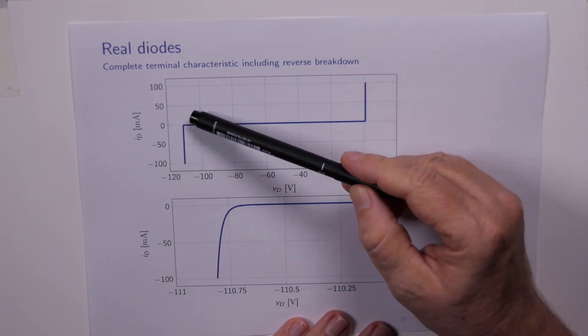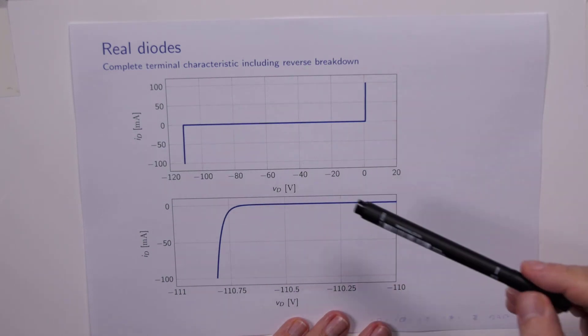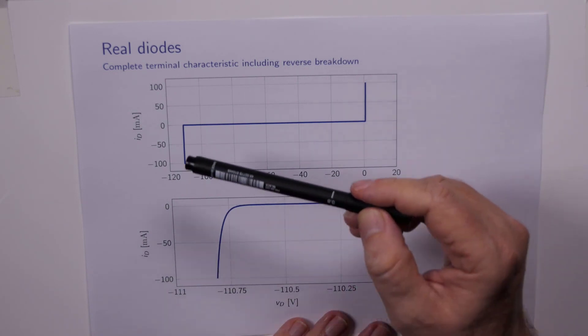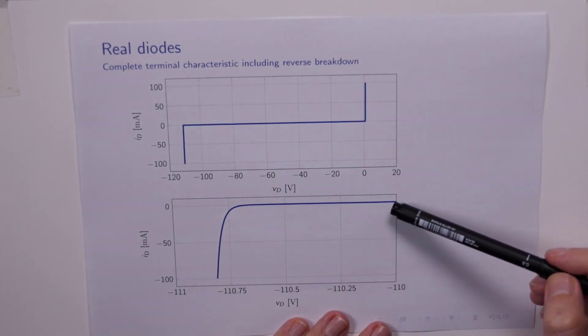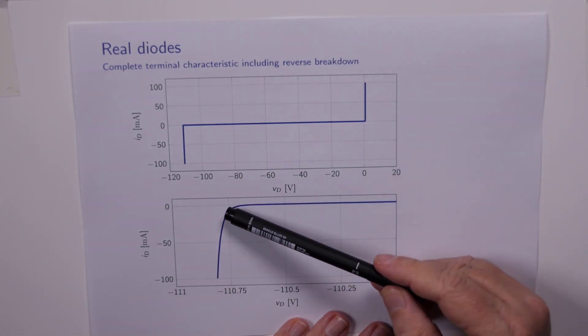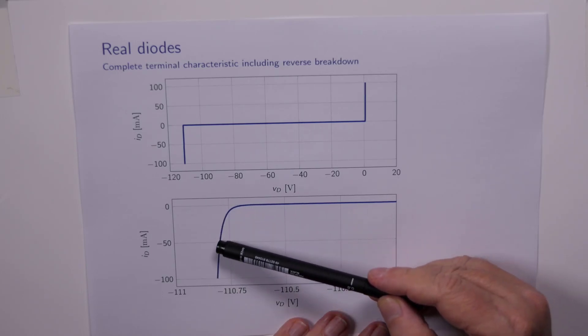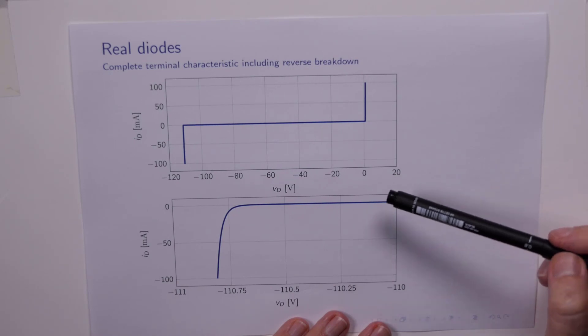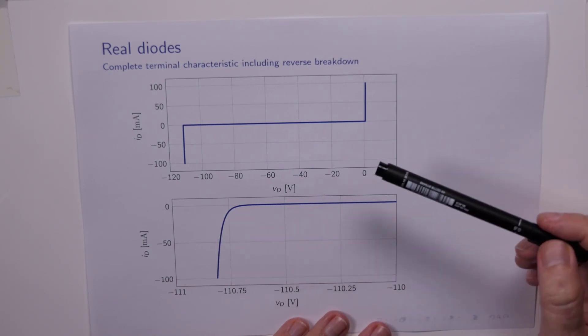If we zoom in on this little area here, we're plotting minus 110 to minus 111, so that's right around this area here. This is what the reverse breakdown looks like. And it's very similar to the forward conduction when VD is around 0.5 to 0.7 of a volt.